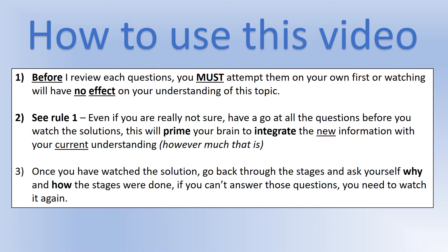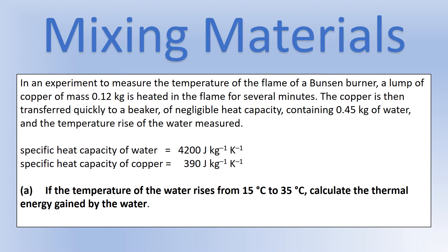The general scenario is: we've taken a lump of copper and put it in a flame for several minutes so the copper reaches the same temperature as the Bunsen burner — it's in thermal equilibrium with it. Then we put the copper into a beaker of water, neglecting any heat transfer to the beaker or surroundings. Using a thermometer, we measure the temperature rise of the water from 15 to 35 degrees, and from that we'll find the temperature of the Bunsen burner.